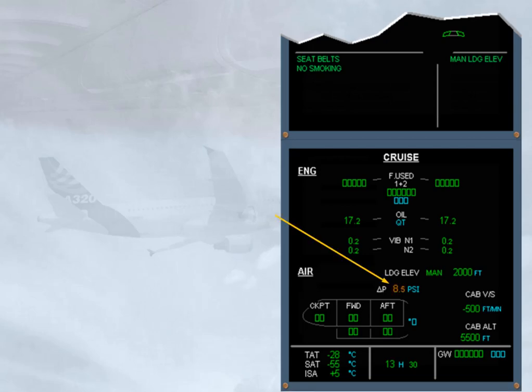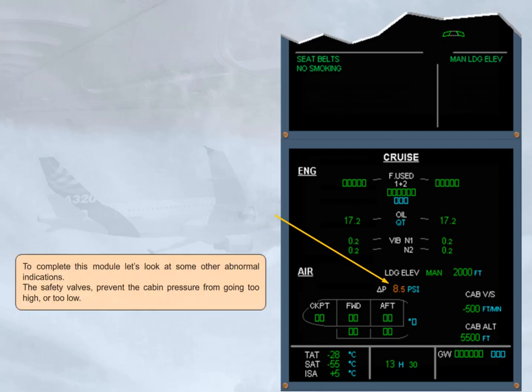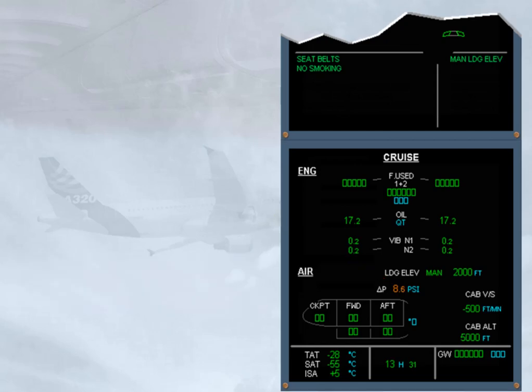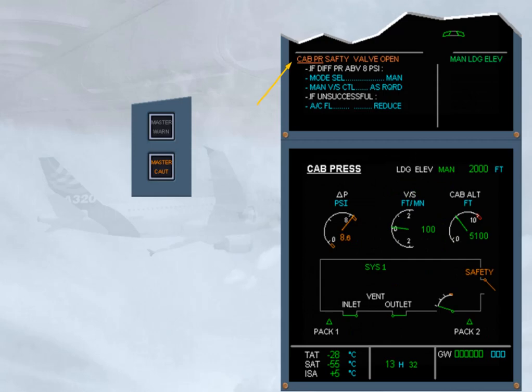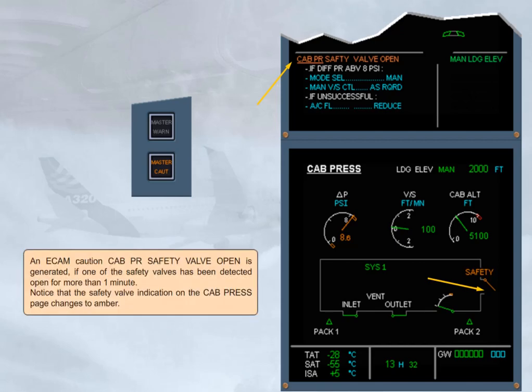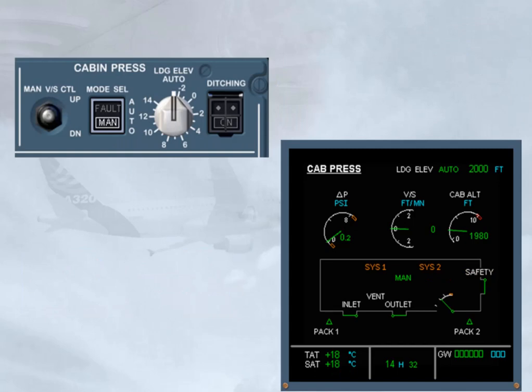The safety valves prevent the cabin pressure from going too high or too low. An ECAM caution 'cabin pressure safety valve open' is generated if one of the safety valves has been detected open for more than one minute, and the safety valve indication on the cab press page changes to amber. If on the ground in case of abnormal residual pressure — with speed below 100 knots, or after all engines are shut down — and with manual mode selected or both CPCs failed, the Residual Pressure Control Unit (RPCU) automatically controls the outflow valve to open.